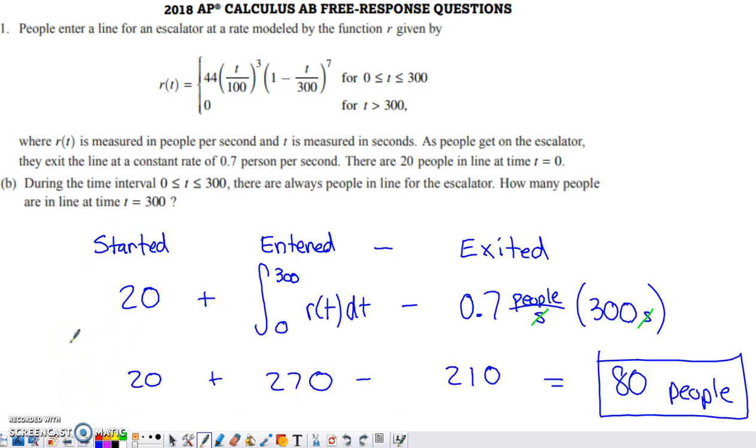Part B tells us that during this time frame 0 to 300, there are always people in line for the escalator. We need to know that so if there was a time when there was no one in line, people aren't exiting the line at that rate anymore. How many people are in line at time 300? We've already done a little bit of the work necessary to answer this question in Part A.